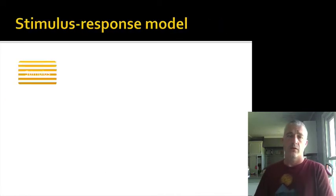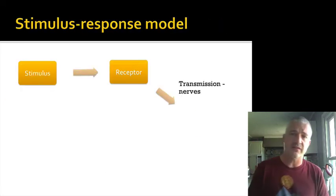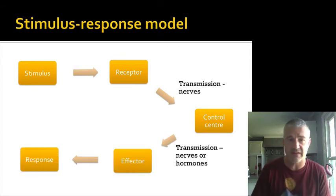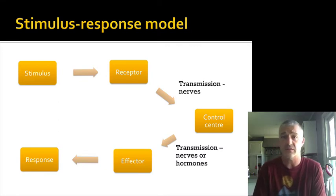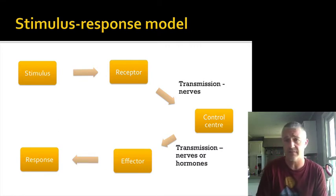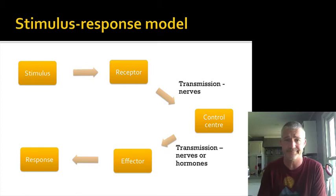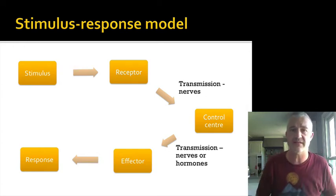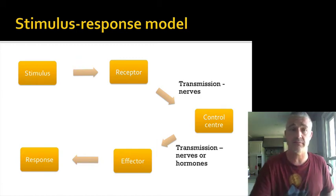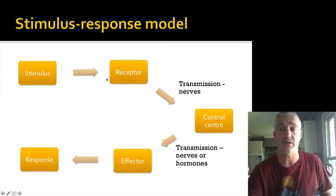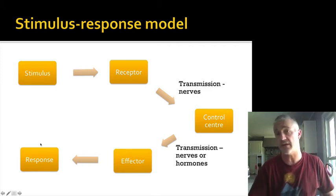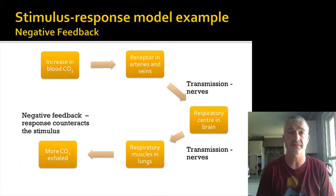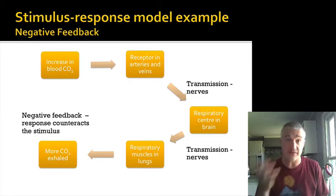This goes back to the stimulus-response model — basically a feedback loop. You get a stimulus, it acts on a receptor, the receptor sends information to a control center, usually the brain or brainstem, which evaluates it. If a change is needed, it sends a signal out to an effector, which produces a response that changes the variable. When the stimulus is read again and it's within range, the control center stops sending the response — homeostasis is restored.